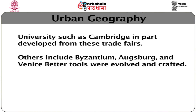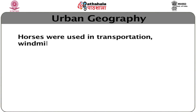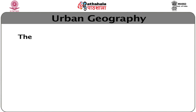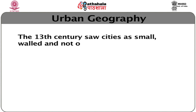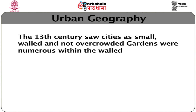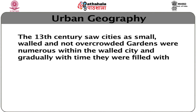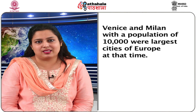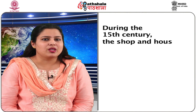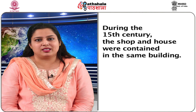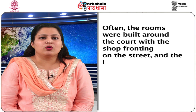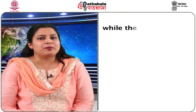Better tools were evolved and crafted. Horses were used in transportation. Windmills were constructed in large number and there was a massive increase in cropland. The 13th century saw cities as small, walled and not overcrowded. Gardens were numerous within the walled city, and gradually they were filled with inferior dwellings. Venice and Milan, with a population of 10,000, were large cities of Europe at that time. During the 15th century, the shop and the house were contained in the same building, with rooms built around courts, the shop fronting on the street, the living room over the shop, and the bedroom over the back.